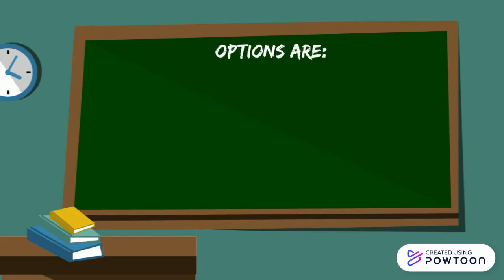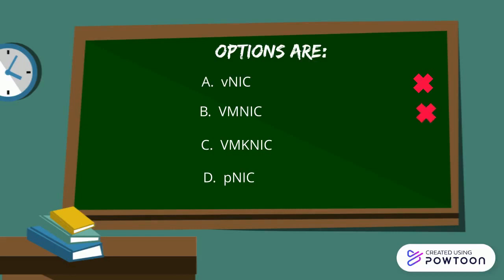Let's review our options again. Option A, vNIC, cannot be the answer because vNIC gets attached to the guest operating system, which does not participate in tagging. vmnic is a physical uplink or physical adapter attached to the physical host, so it cannot be the answer. pNIC is another synonym of vmnic, which is again a physical uplink. So vmknic is the only component which actually participates in tagging and untagging operations when packets pass through the virtual switch.